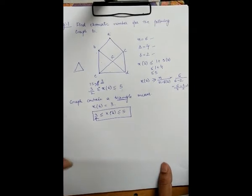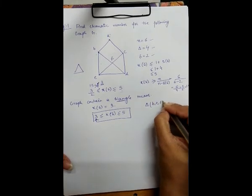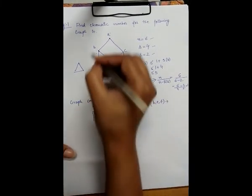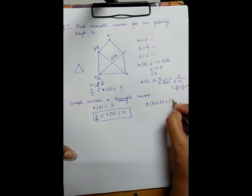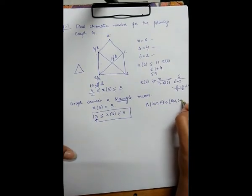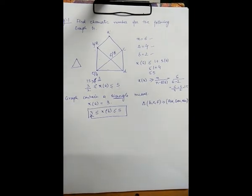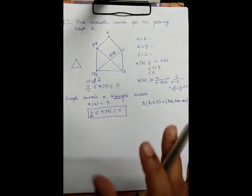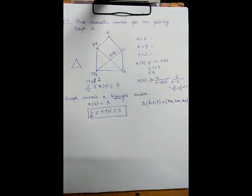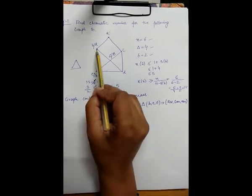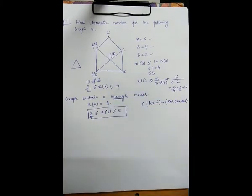We consider one triangle at a time. First, I consider the triangle B, E, F and paint it with red, green, and blue — B with red, E with green, and F with blue. My objective is to paint all the vertices with proper coloring. These 3 vertices B, E, F are painted properly because all adjacent vertices have different colors.